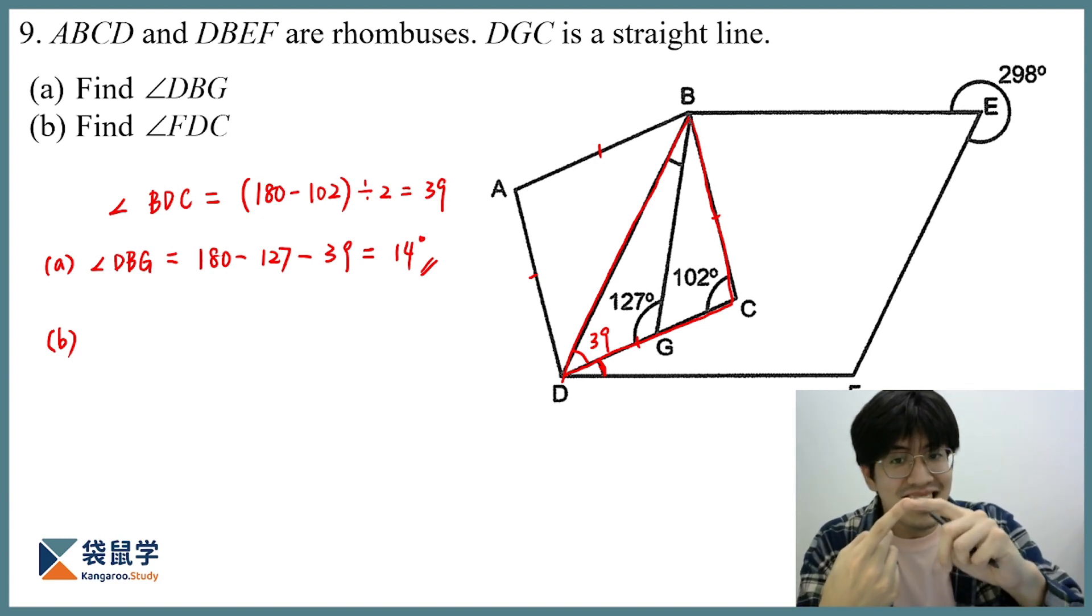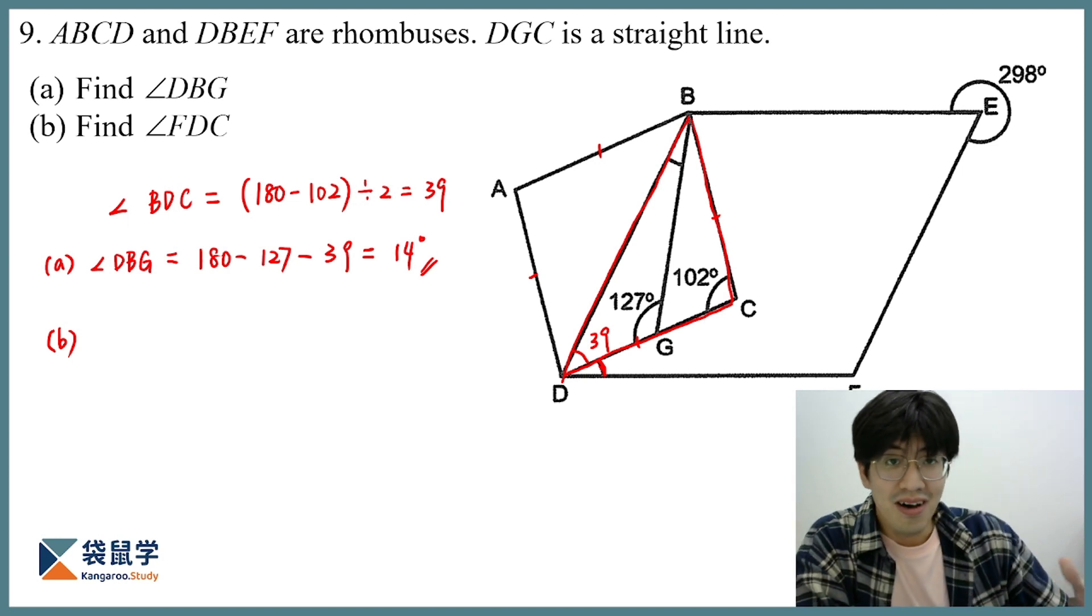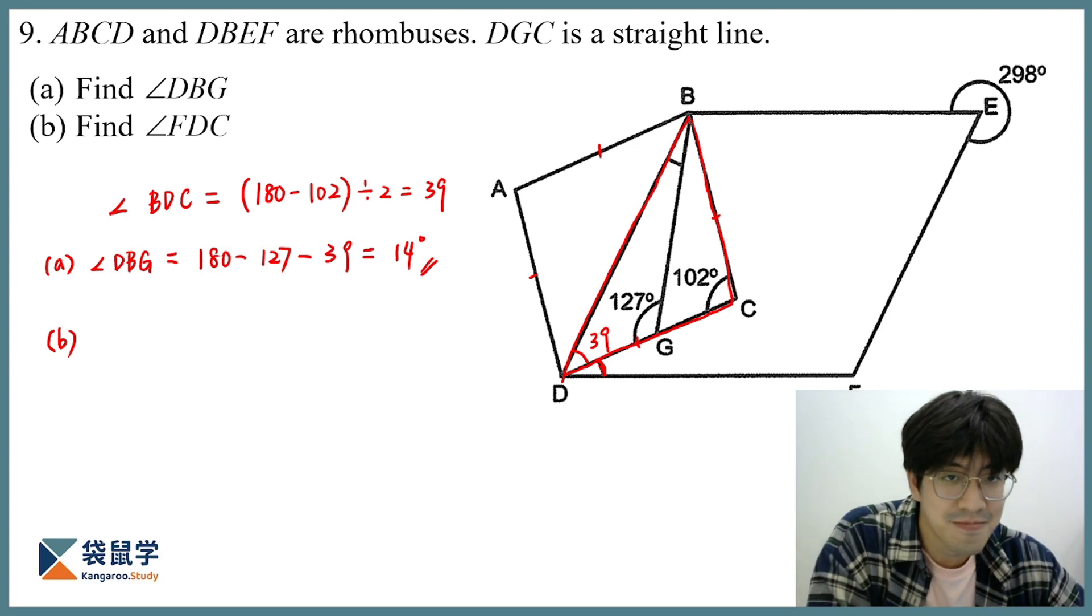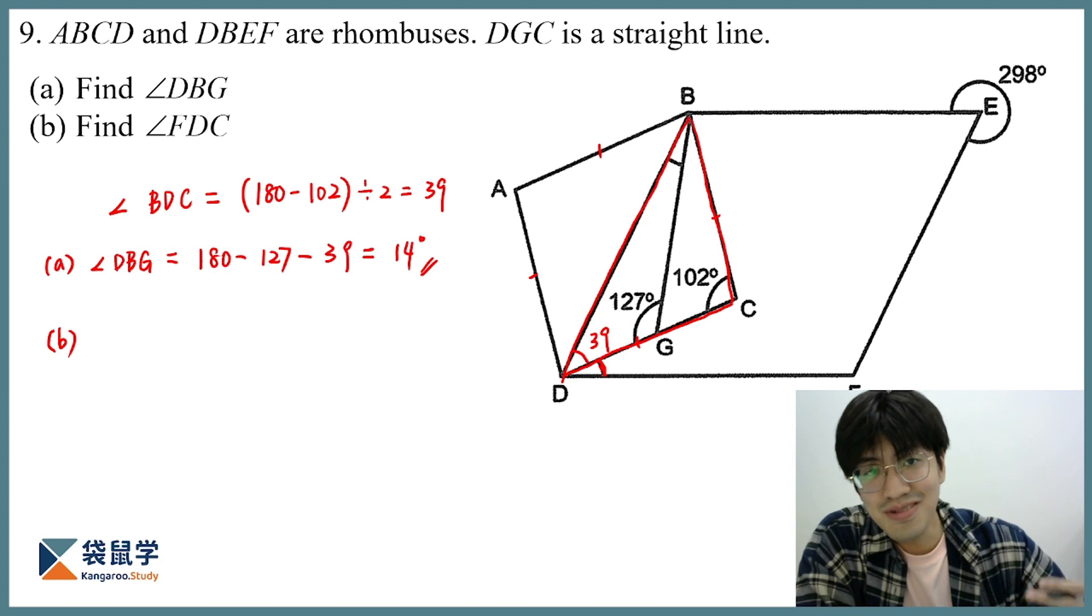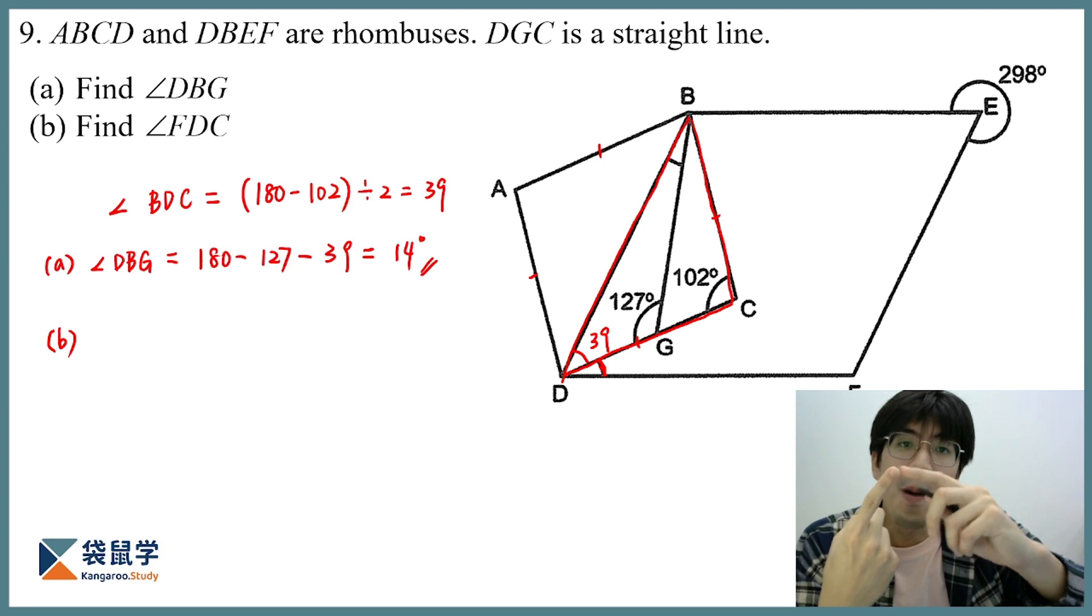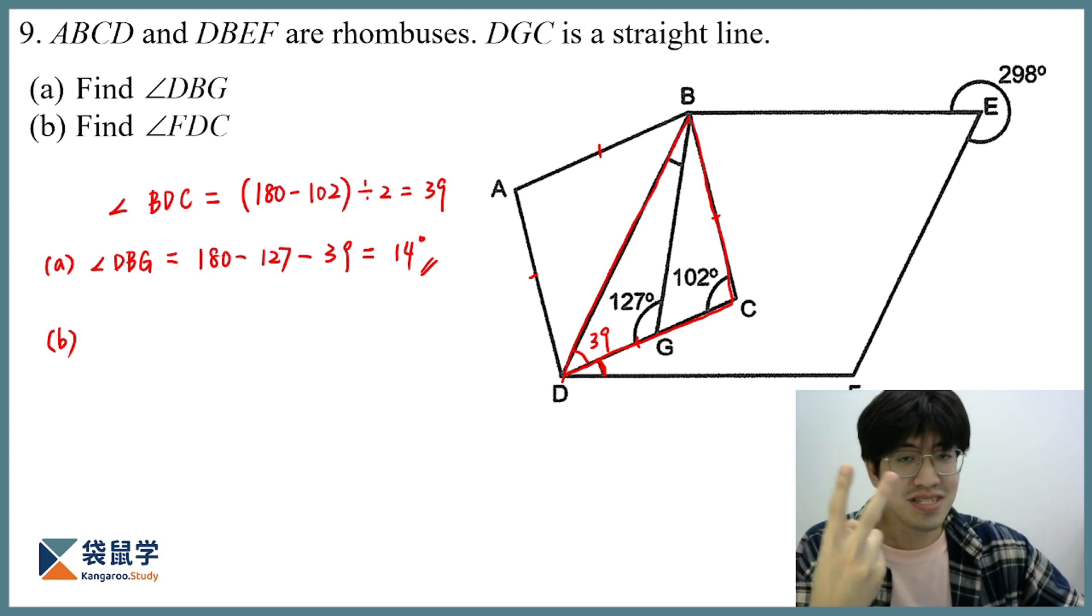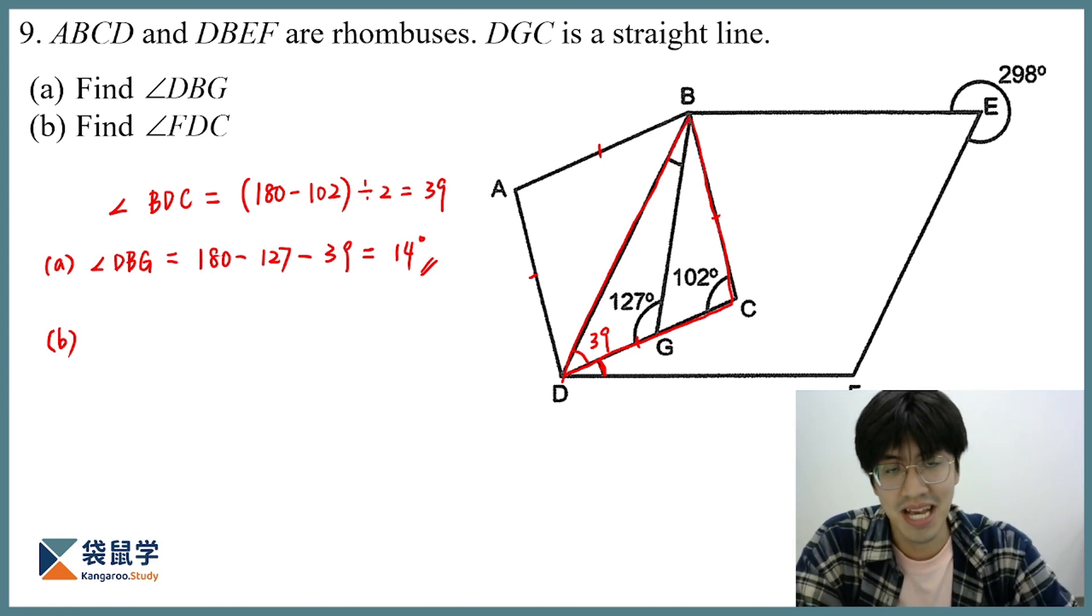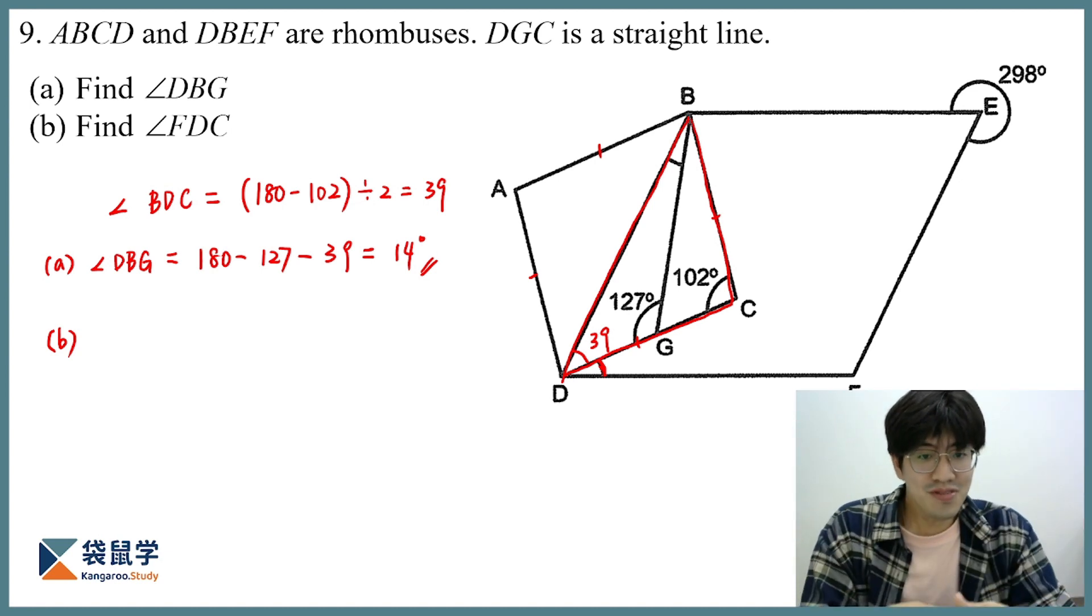Now, beside ABCD is a rhombus, we know DBEF is also a rhombus. Now in this case, what kind of properties of a rhombus can help us solve the second part? Well, just like a parallelogram, the rhombus, the angles in the rhombus also follow two properties. First, opposite angles are equal, and second, adjacent angles add up to 180. Now, which of this property can help us solve the second part? The first rule. Why? Because we can see that over here, I can get this angle.